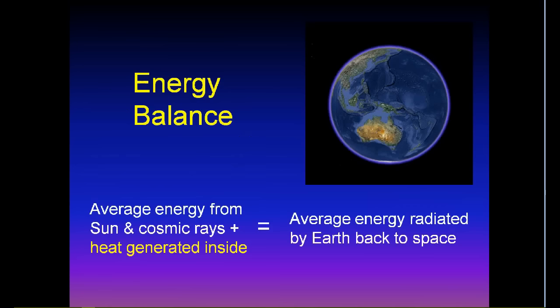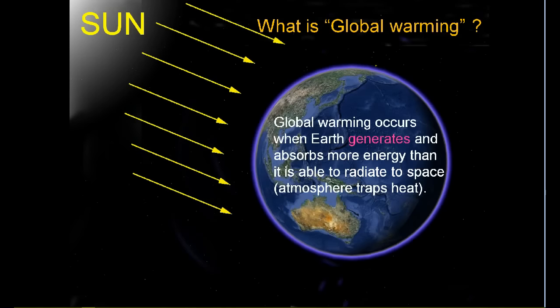Energy balance occurs when the average energy from the Sun plus heat generated inside Earth is equal to the average energy radiated by Earth back to space. Global warming occurs when Earth generates and absorbs more energy than it is able to radiate to space because the atmosphere traps heat.